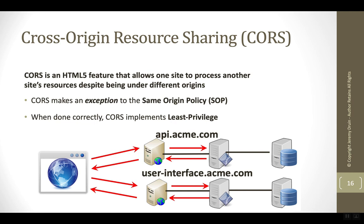CORS technology allows sites to exchange information safely and responsibly by making exceptions to the same origin policy, and the site that has the data — the API — is the one who's in control.